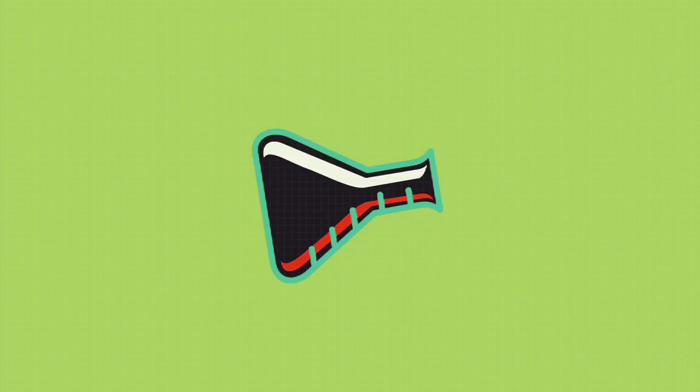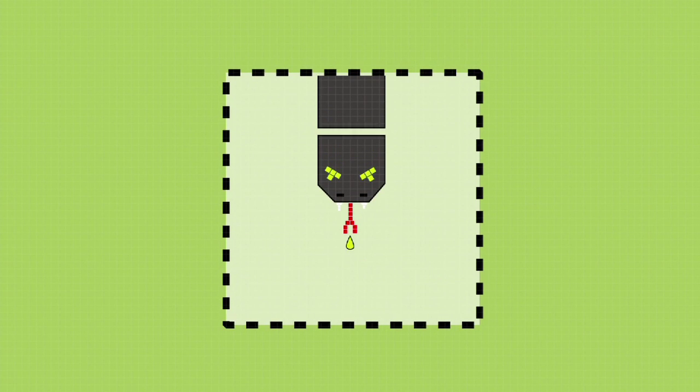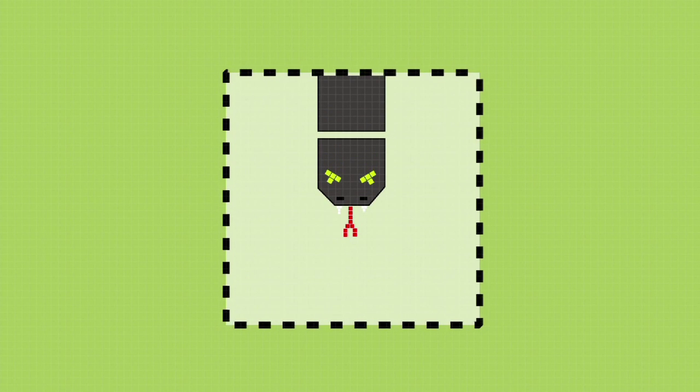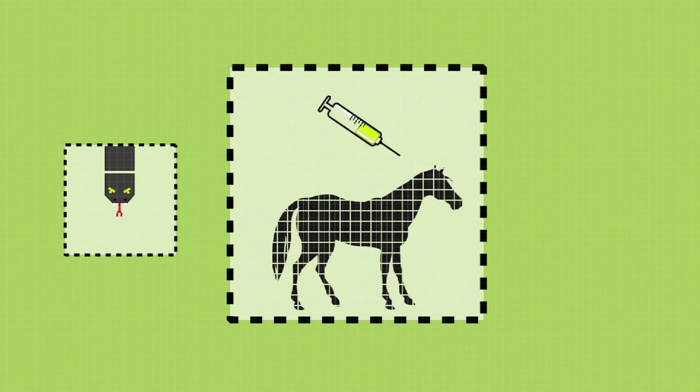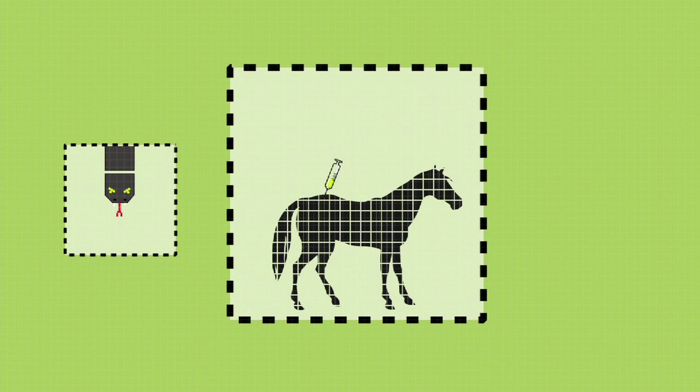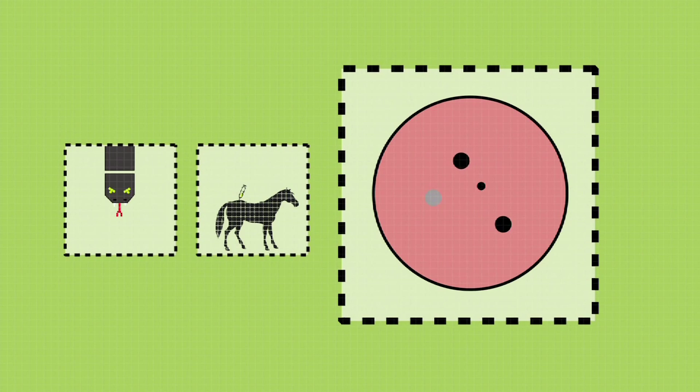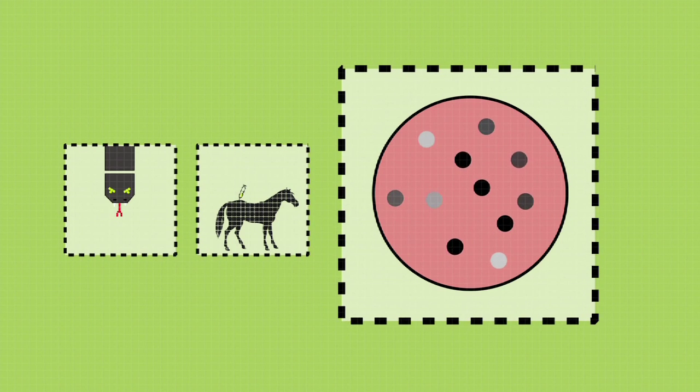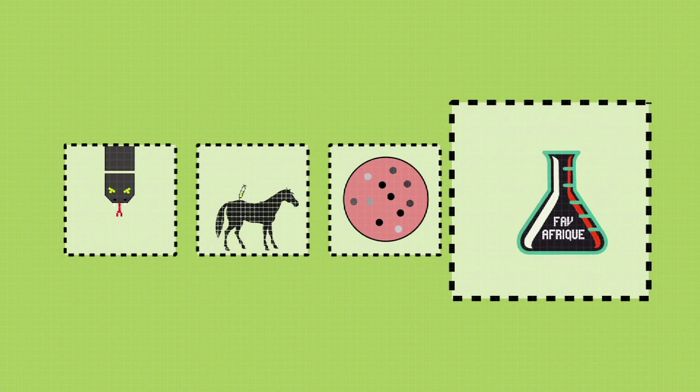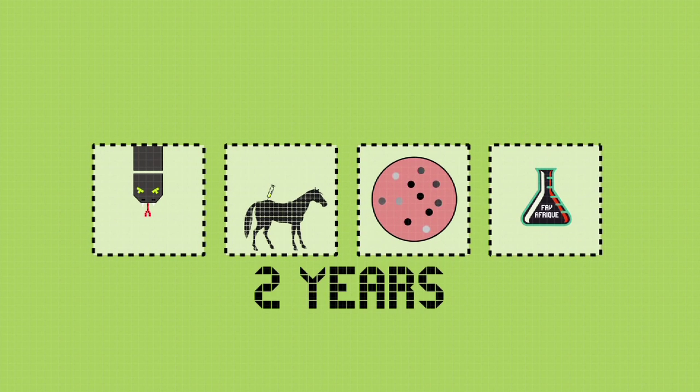Manufacturing the anti-venom is complex. It begins with extracting snake venom, which is diluted and injected into a horse, as the horse's immune system produces antibodies that can then be harvested. The serum is then purified prior to being packaged. The whole process takes about two years.